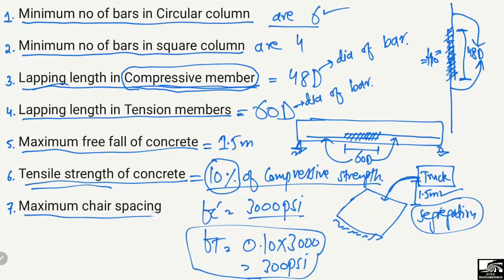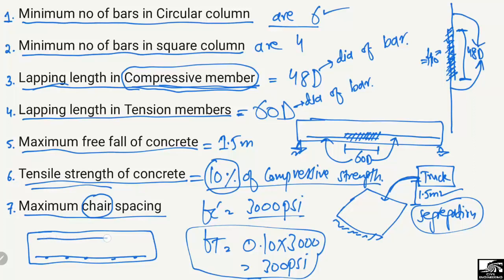The last point is the maximum chair spacing. Chairs are reinforcement supports used to maintain spacing between top and bottom reinforcement in a slab. The recommended maximum chair spacing is one meter — the distance between chairs should not exceed one meter. I hope you understand these main points; please subscribe to our channel for daily civil engineering videos.